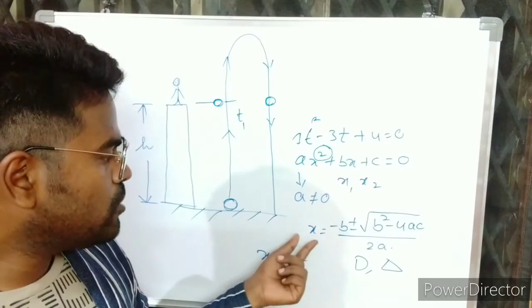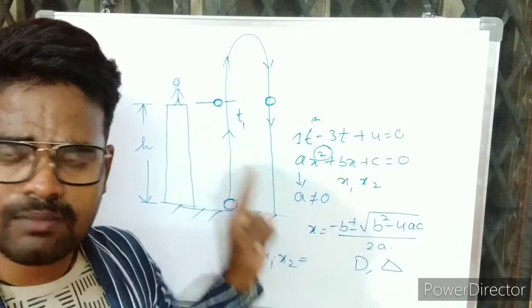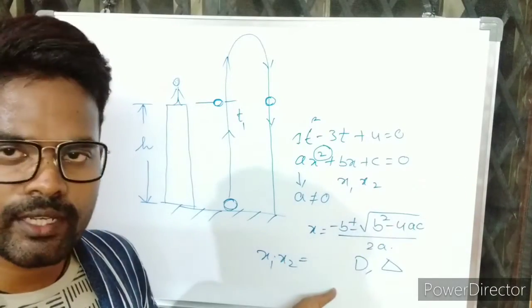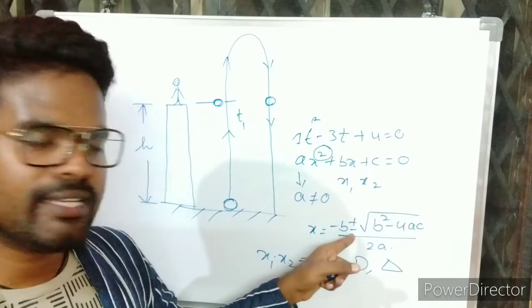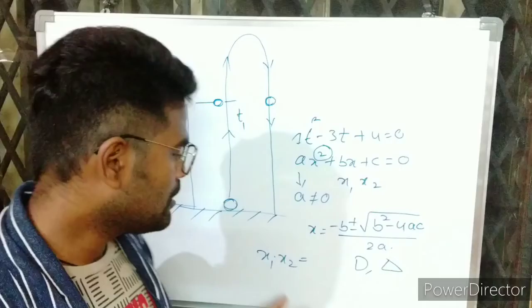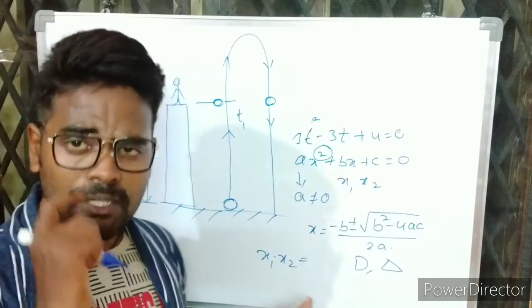x1 and x2 are going to be 2 values. x1 is minus b plus square root of b square minus 4ac by 2a. And x2 is minus b minus square root of b square minus 4ac by 2a. That is the two different values. So this is the value of x1 into x2.